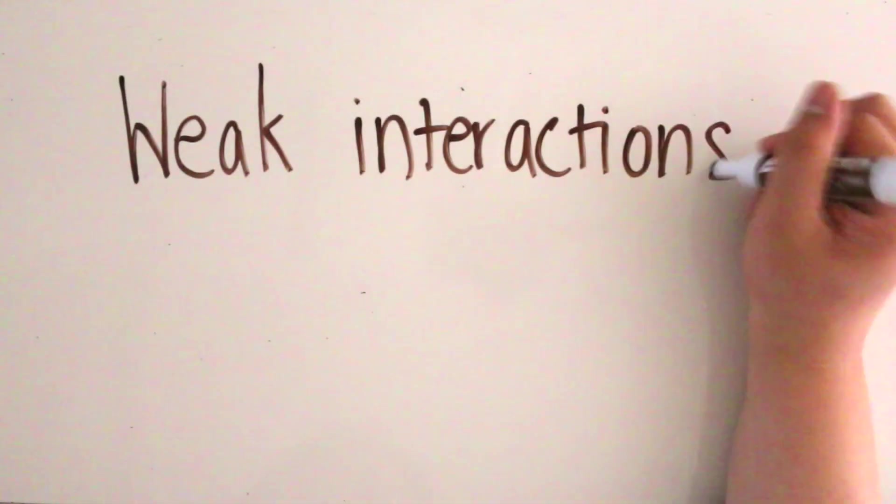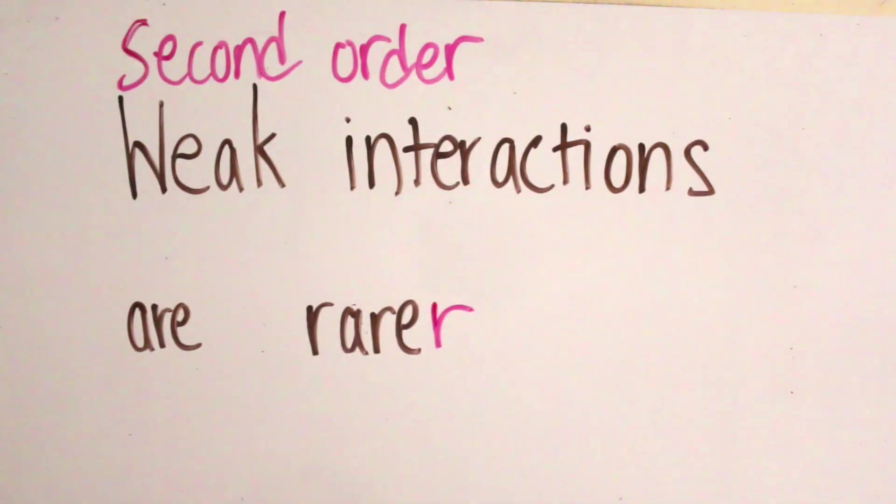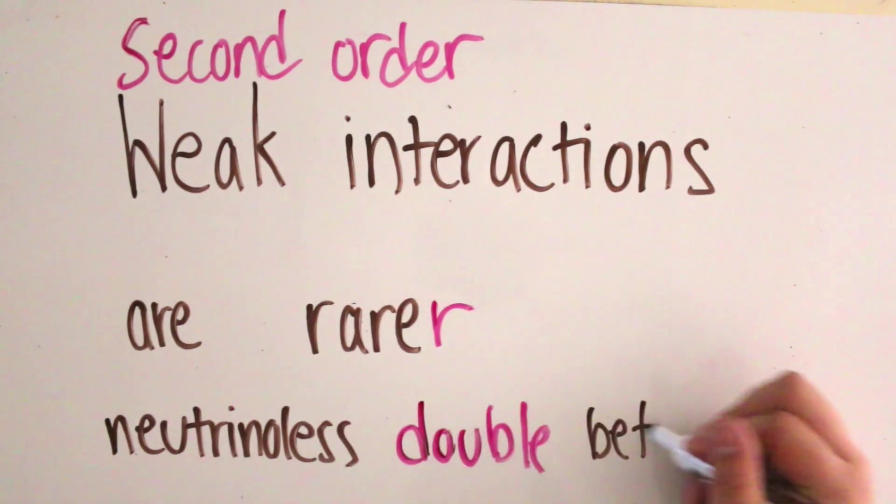Simple, right? Unfortunately not. Weak interactions are rare. Second-order weak interactions like neutrinoless double beta decay are even rarer.